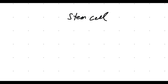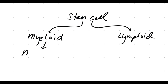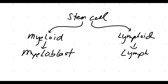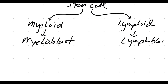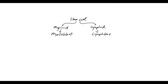We know that the stem cell can become any cell. Here, we're going to talk about it in the context of it becoming a myeloid cell or a lymphoid cell. The myeloid cell becomes a myeloblast, while the lymphoid cell becomes a lymphoblast, and from there becomes a lymphocyte.